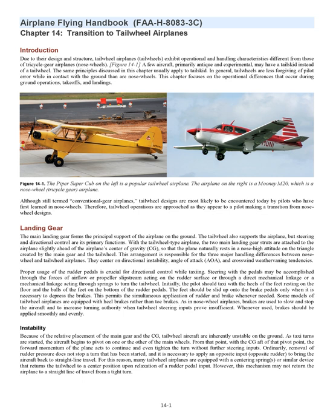Instability: because of the relative placement of the main gear and the CG, tailwheel aircraft are inherently unstable on the ground. As taxi turns are started, the aircraft begins to pivot on one or the other of the main wheels. From that point, with the CG aft of that pivot point, the forward momentum of the plane acts to continue and even tighten the turn without further steering inputs. Ordinarily, removal of rudder pressure does not stop a turn that has been started, and it is necessary to apply opposite rudder to bring the aircraft back to straight-line travel.